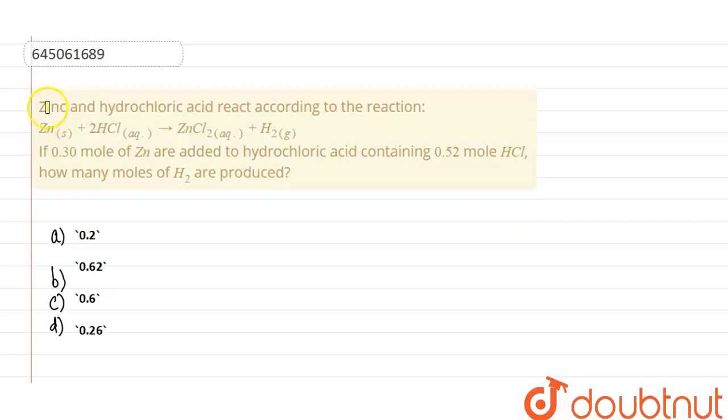Hello students, the question is: Zinc and hydrochloric acid react according to the equation Zn in solid state reacts with 2 moles of HCl in aqueous state to give ZnCl2 plus hydrogen gas. If 0.30 moles of Zn are added to hydrochloric acid containing 0.52 moles of HCl, how many moles of hydrogen are produced?